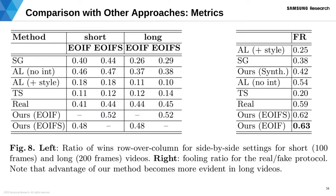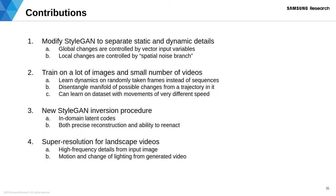Here we present results of a side-by-side user study on the left and a real-vs-fake user study on the right. The higher preference scores belong to our models. For more quantitative evaluations, including generation and encoding ablation studies, please refer to the paper and supplementary materials.